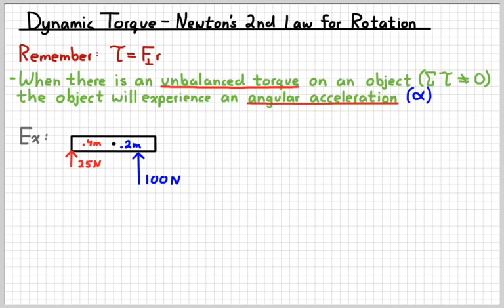So, for example, suppose we have this object, which is pivoted in the middle, so that's our axis, that black dot in the middle, and we have a 25 Newton force on the left edge, a moment arm of 0.4 meters, and then a 100 Newton force on the other side with a moment arm of 0.2 meters. To find the net torque on that bad boy, we would simply add the torque due to each individual force.